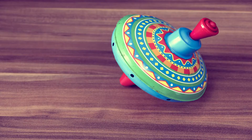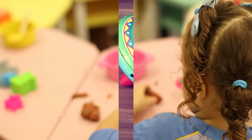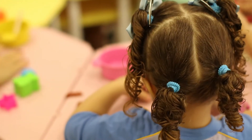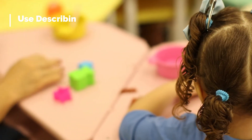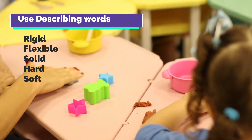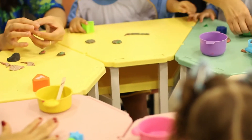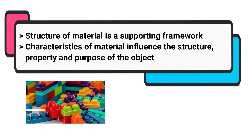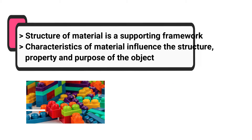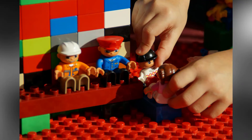The study of this unit helps a child analyze an object and identify the material it is made of. It also helps them describe the properties of materials using suitable words like rigid, flexible, and solid. They start seeing the structure of an object as a supporting framework and can explain how the characteristics of a material influence the property and purpose of the object. The province of Alberta approaches this unit with a hands-on learning method, encouraging children to build things using different materials.